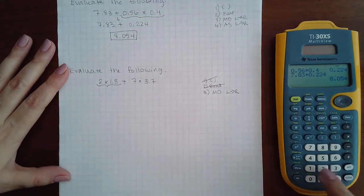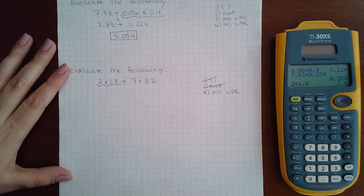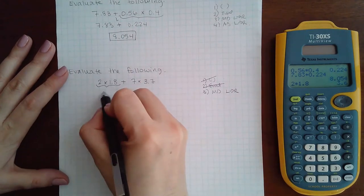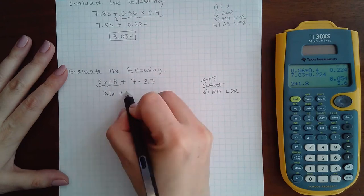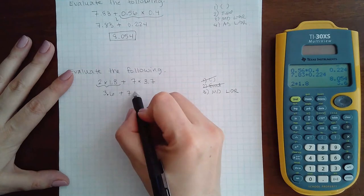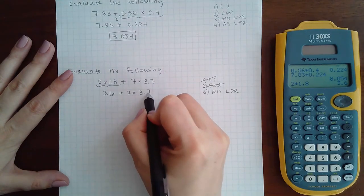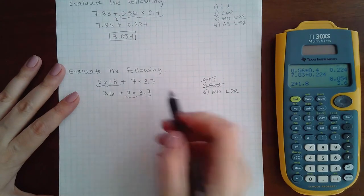And when we say do them in order from left to right, it is important that you only do one operation at a time. Some problems it won't matter but then others it will, so it's very important that you only do one operation at a time. So then now the next multiplication is over here.